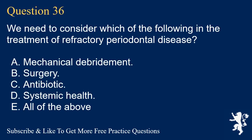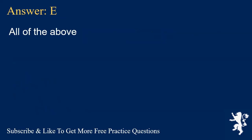Question 36. We need to consider which of the following in the treatment of refractory periodontal disease? A. Mechanical debridement. B. Surgery. C. Antibiotic. D. Systemic health. E. All of the above. Answer: E. All of the above.